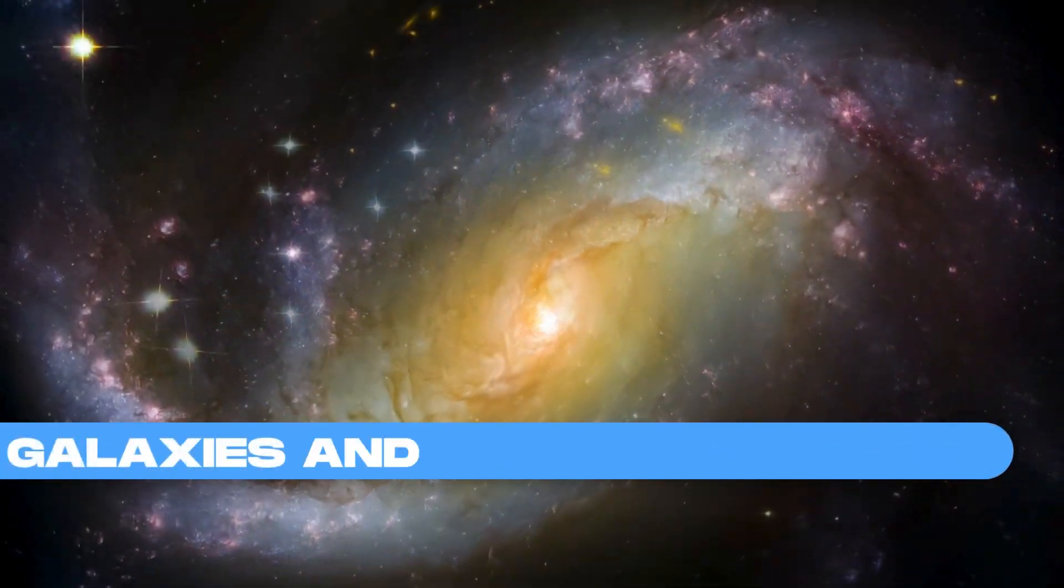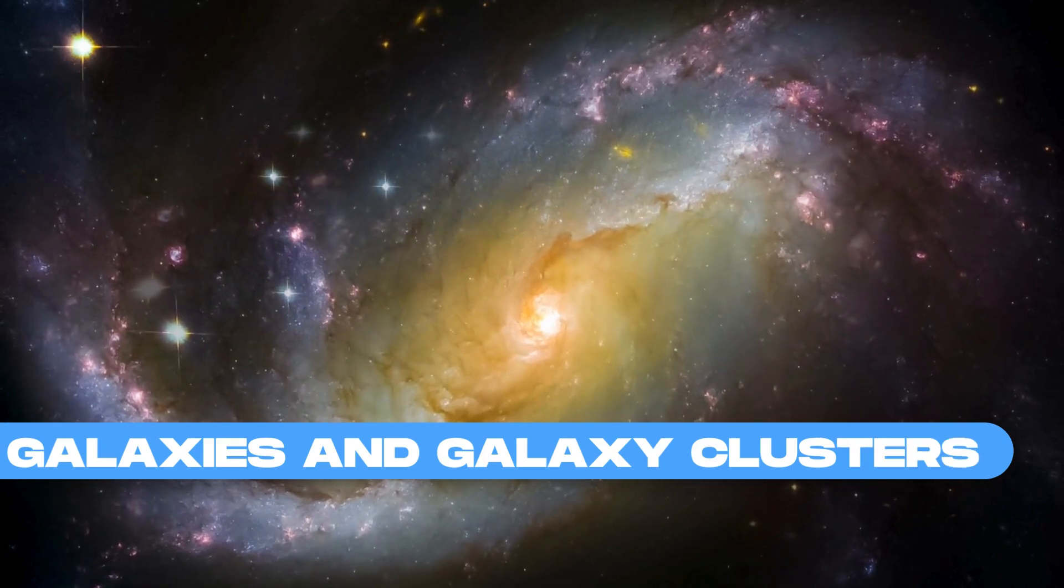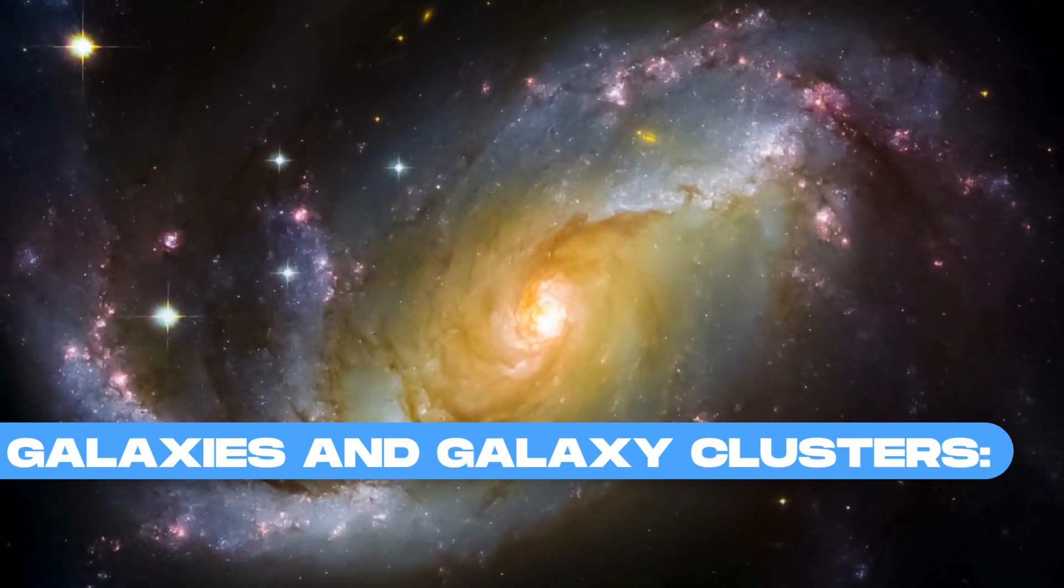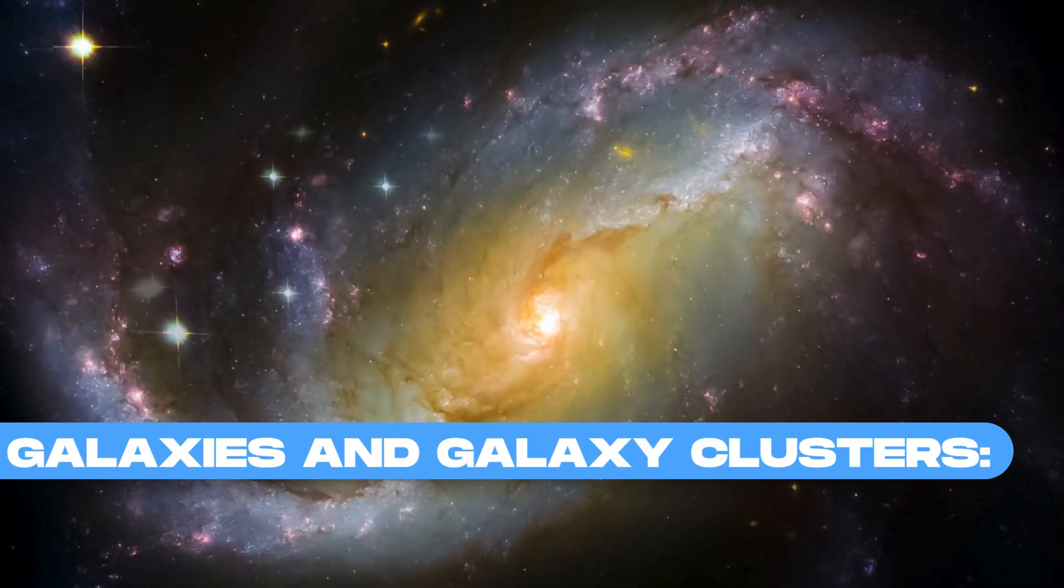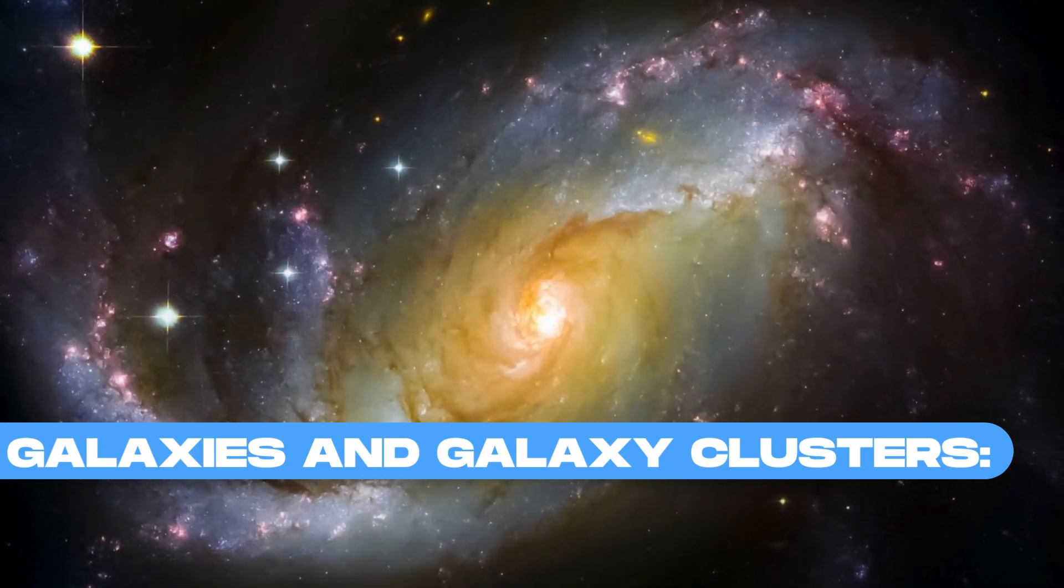Galaxies come in various shapes and sizes, ranging from dwarf galaxies to massive elliptical and spiral galaxies. They can span from a few thousand to several hundred thousand light-years in size.